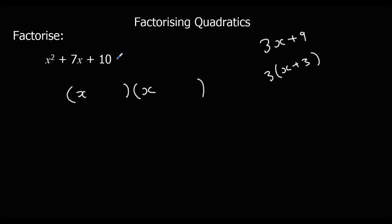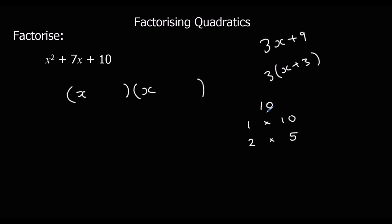The next thing we're going to do is look at what can multiply to make ten. What are the factors of ten? To make ten, we can either do one times ten, or two times five — those are the factors of ten. We have to look at which of these pairs of factors can make seven when we add them up or take them away. One and ten cannot make seven, so it has to be two and five.